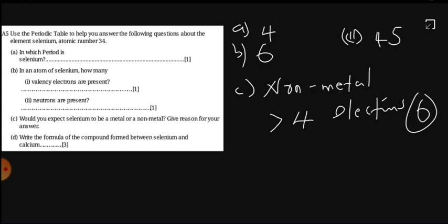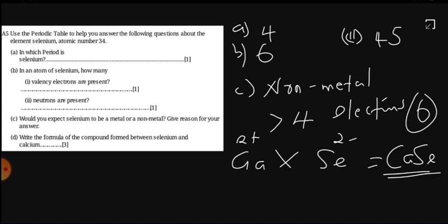Write the formula of the compound formed between selenium and calcium. You know that calcium is in group 2, so it has a valence of 2. And selenium is in group 6, so it is gaining 2 electrons. So when we cross-multiply, we are going to have CaSe as the formula.